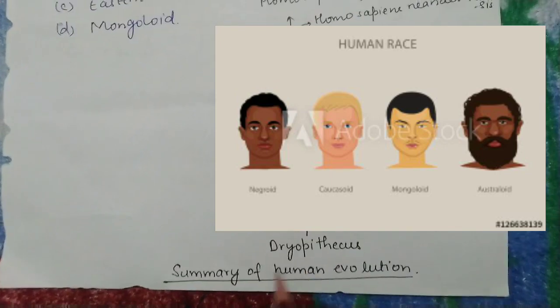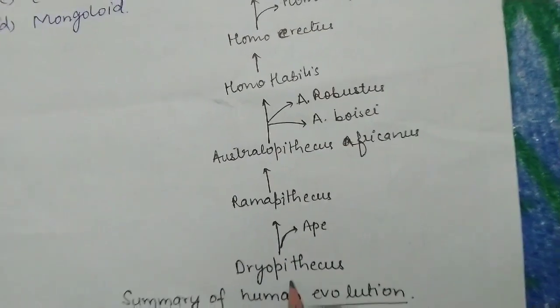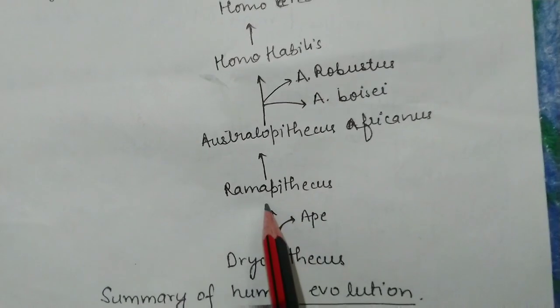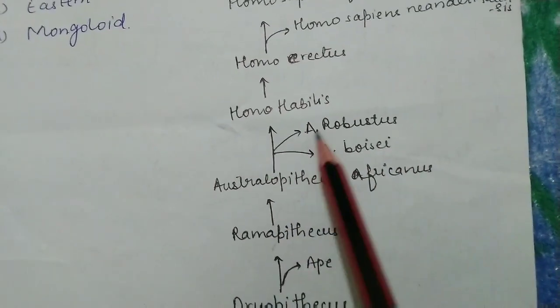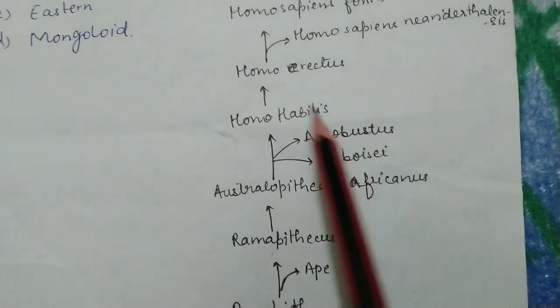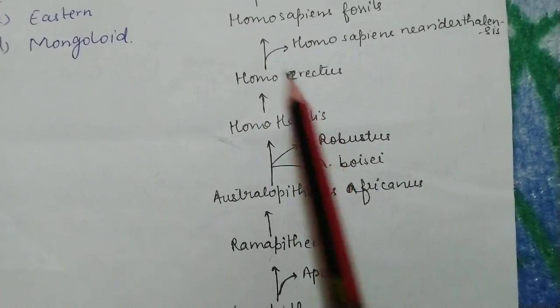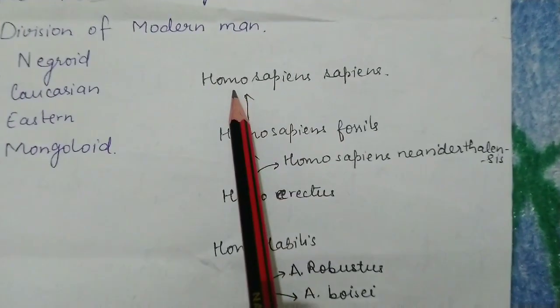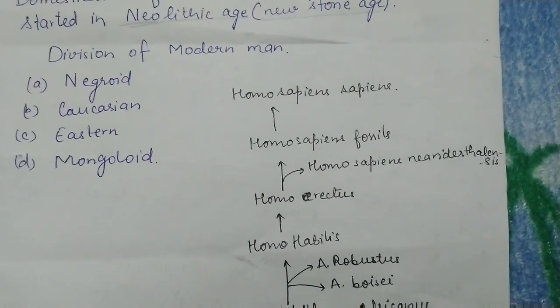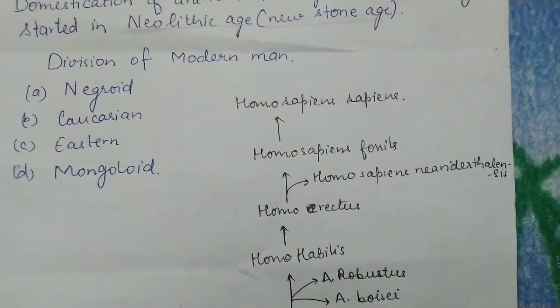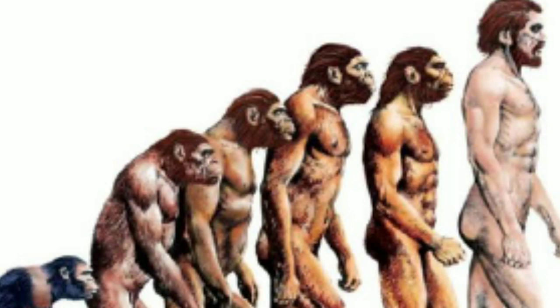There is a chart on screen summarizing human evolution, starting from Dryopithecus, Ramapithecus, Australopithecus africanus, Australopithecus robustus, Homo habilis, Homo erectus, Homo sapiens fossils, and Homo sapiens sapiens. I hope you liked this video — if you did, please like, subscribe, share, and comment. Thank you so much.